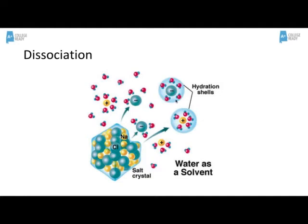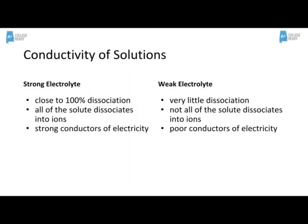This is what dissociation is. So if a solute dissociates and forms ions in water, then we say it's an electrolyte. If it does not, then we say it is a non-electrolyte.